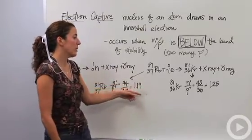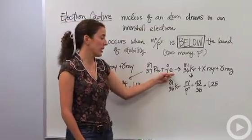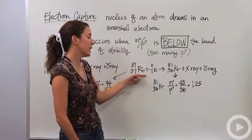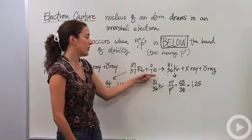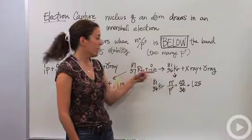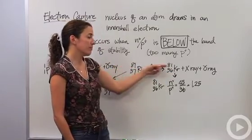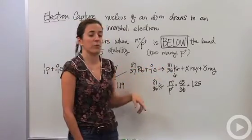So what we're going to do is we're going to suck in an inner shell electron and we're going to change this. We're going to mutate this rubidium and we're going to change it to krypton. And so the atomic number is going to lower by 1, and the mass number will be the same. And so it's going to be krypton with the mass number of 81.